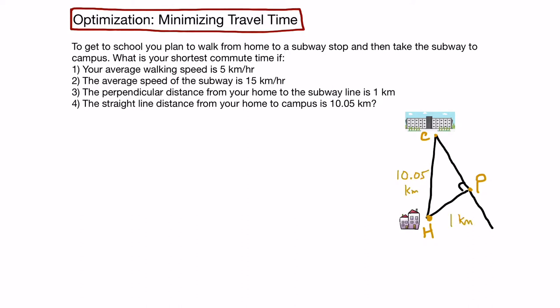Now let's think about ways that we could get to campus. One way would be to walk directly from home all the way to campus, assuming there is a road to walk along. If we did that, how long would that take us? Well, our walking average speed is 5 km per hour.